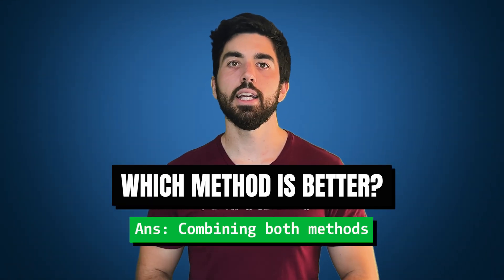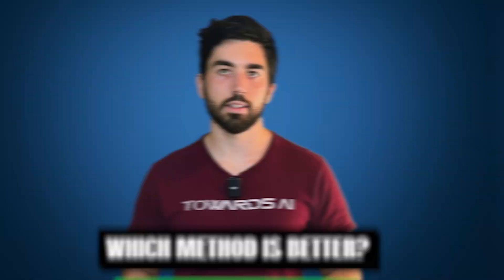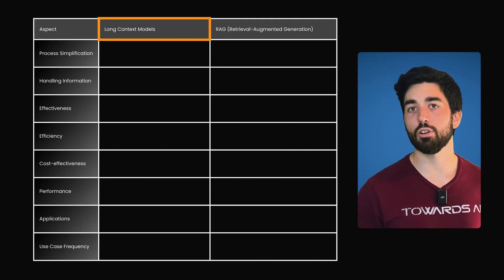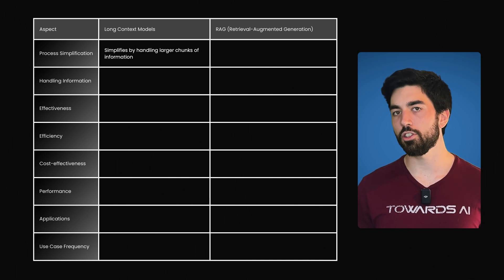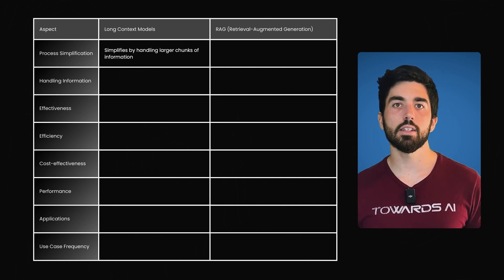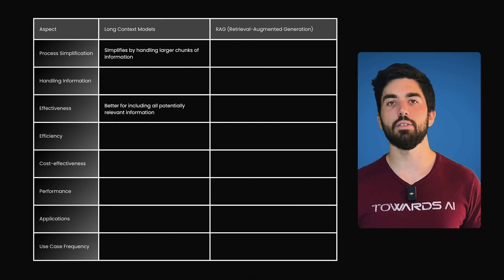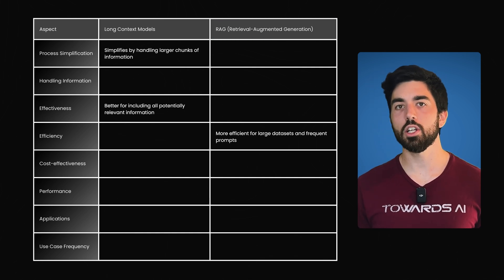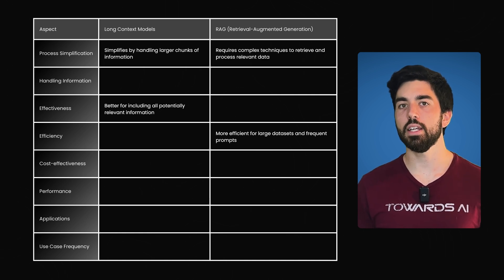So which one is better? Generally, I think there's a place for using and combining both methods. Long context models simplify the overall process by reducing the need for complex RAG techniques, as they can handle larger chunks of information at once. This can improve the chances of including relevant information and reduce the need for extensive evaluation. However, RAG remains valuable especially when dealing with large datasets, when processing time is critical, or when cost-effectiveness is a priority.